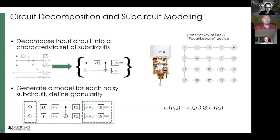We test these ideas using IBM's Poughkeepsie device — a 20-qubit superconducting system. We also plan to look at an asymmetric readout model that characterizes the transition from zero and from one differently.